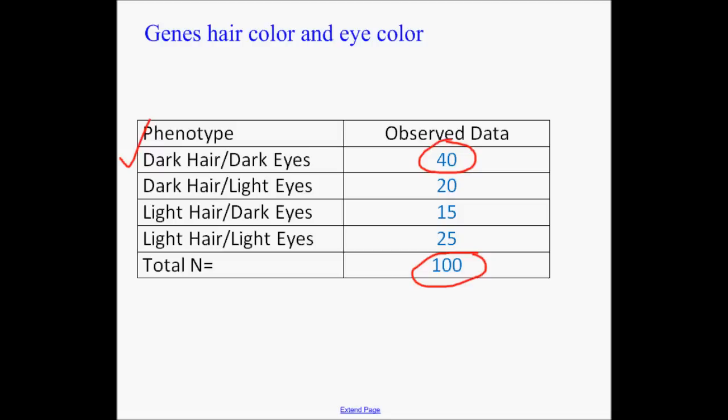So far, so good, right? And the question, though, is how do we figure out what the expected data is? Now remember, it's tricky. All 100 of those people pretty much came from different parents, different crosses. So there is no one set ratio. We can't tell whether they came from a heterozygous cross or a homozygous cross or whatever. All we can do is what is the frequency of the trait in the population? So here's how you do it.